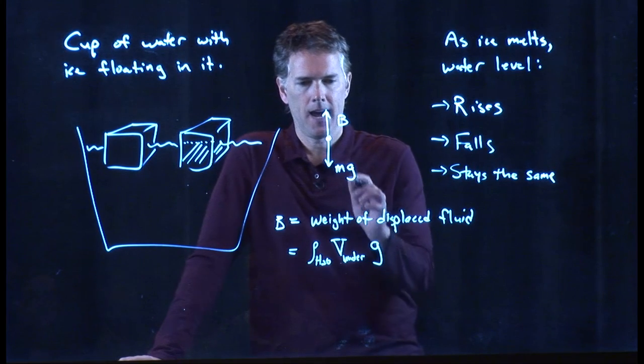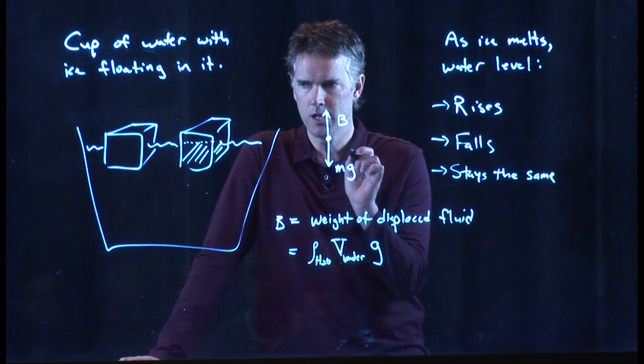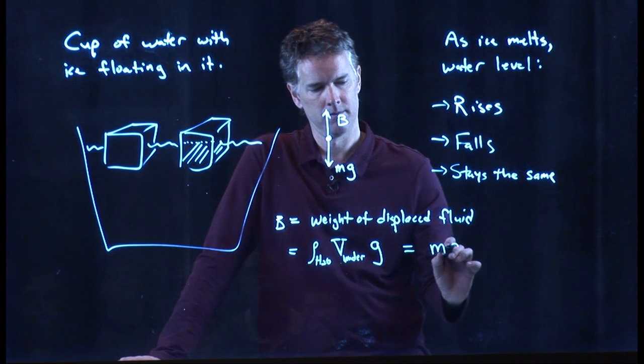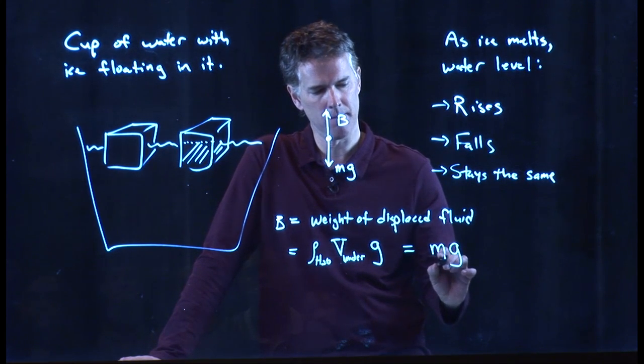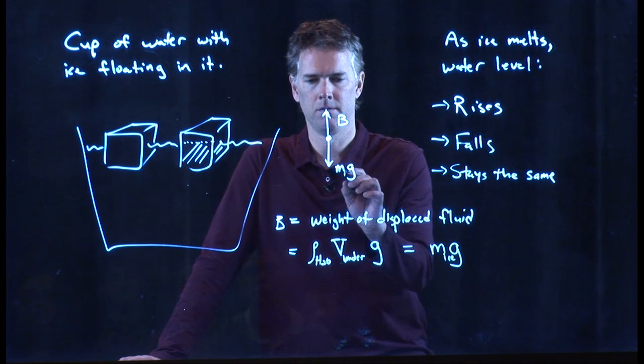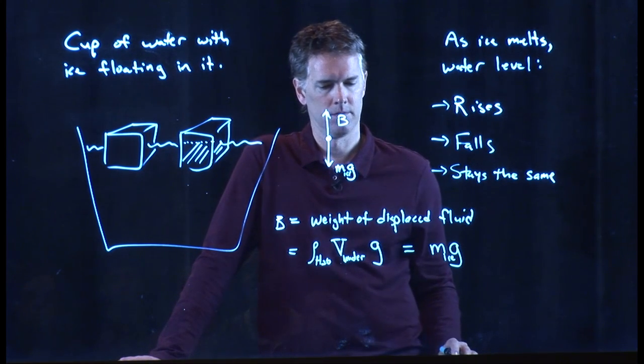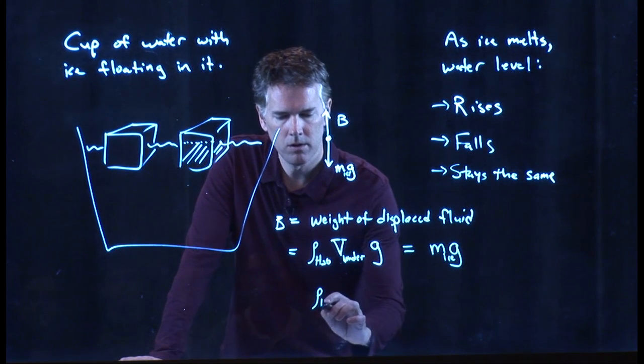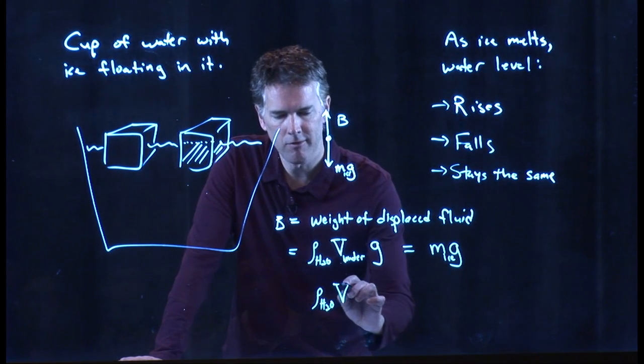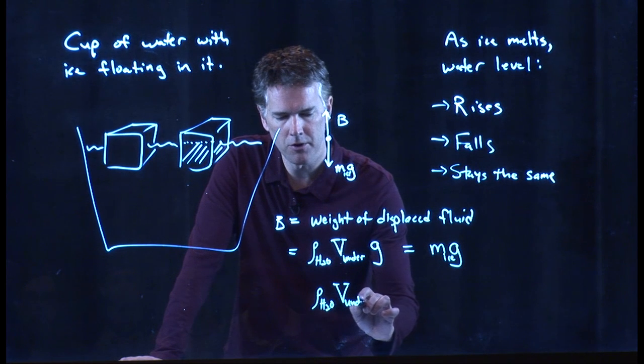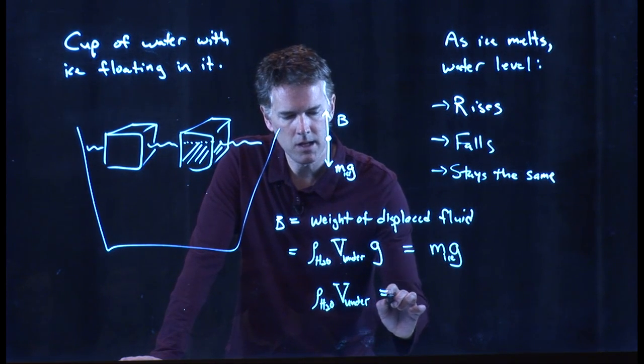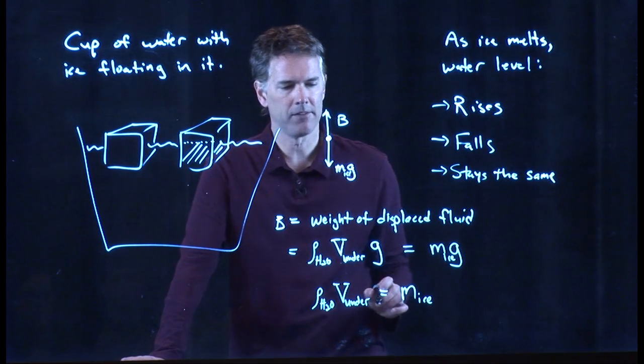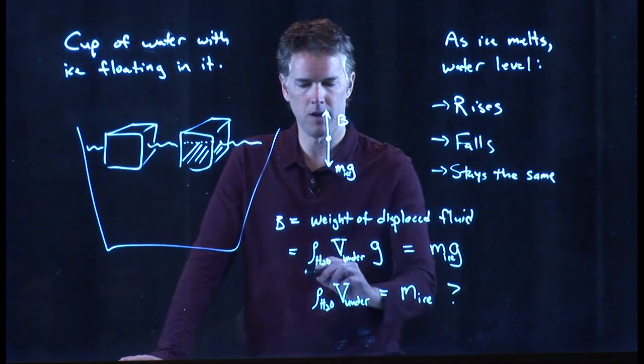But that has to be equal to mg if it's floating, where this m is the mass of the ice. So what can I say here? Rho H2O times that volume that's underneath is equal to the mass of the ice. The g's, of course, cancel out.